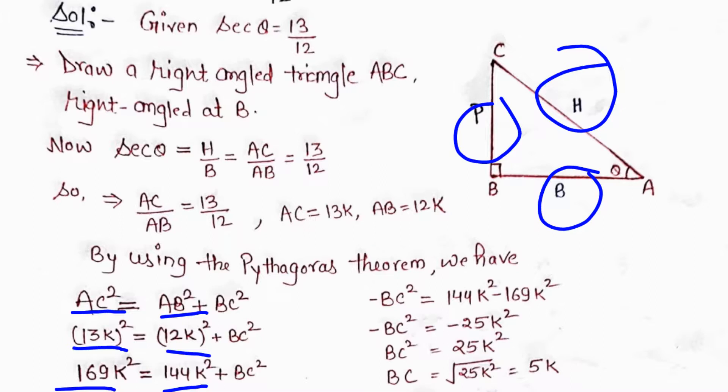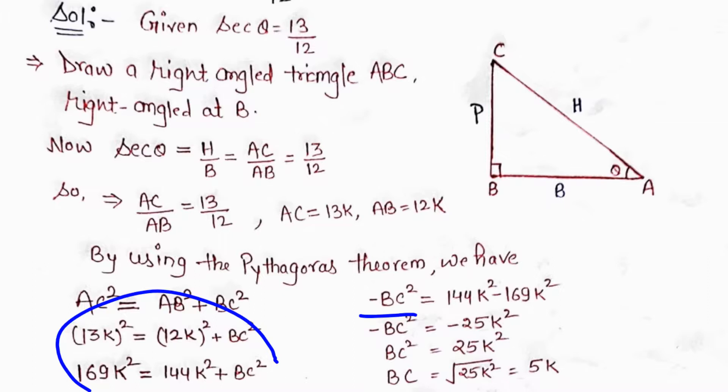So 169K² = 144K² + BC². Rearranging, BC² = 169K² - 144K². This gives us BC² = 25K².